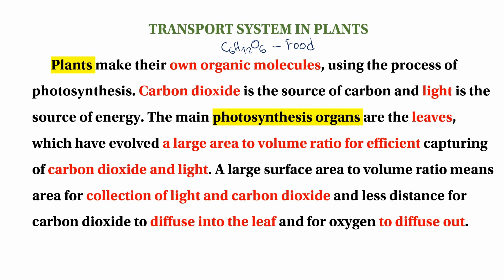The main photosynthesis organs are the leaves. Leaves have a large surface area to collect light and carbon dioxide efficiently. This large surface area to volume ratio provides area for collection of light and carbon dioxide, and allows time for carbon dioxide to diffuse into the leaf and for oxygen to diffuse out.